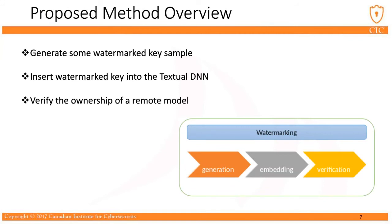We have explained the importance of deep neural networks, watermarking, and the problem statement. Now we want to present the proposed method. Our method has three main phases: watermark generation, watermark embedding, and watermark verification. In these three phases, we generate some watermark key samples and insert them into the deep neural network model. At the end, we verify the ownership of a remote model.